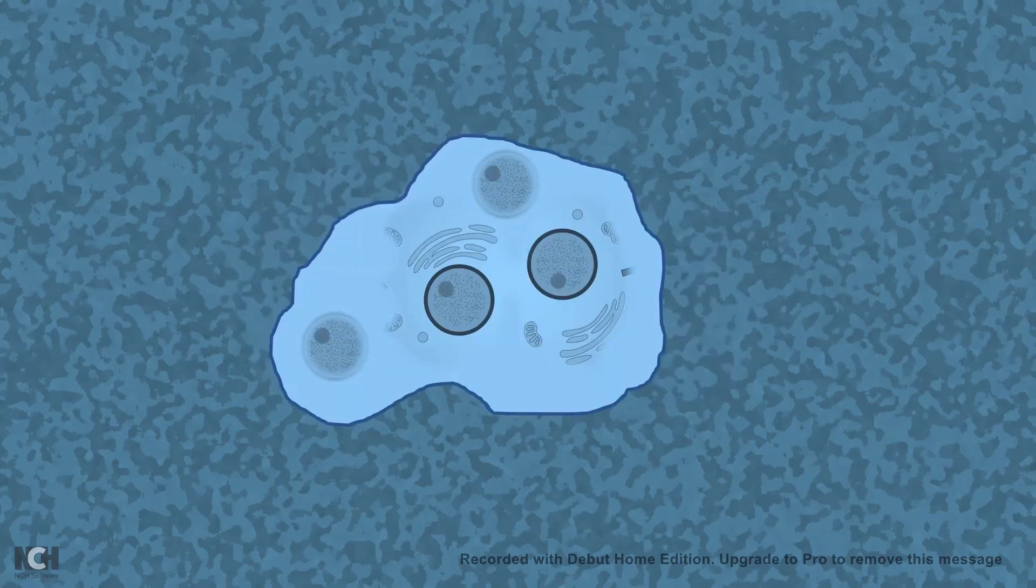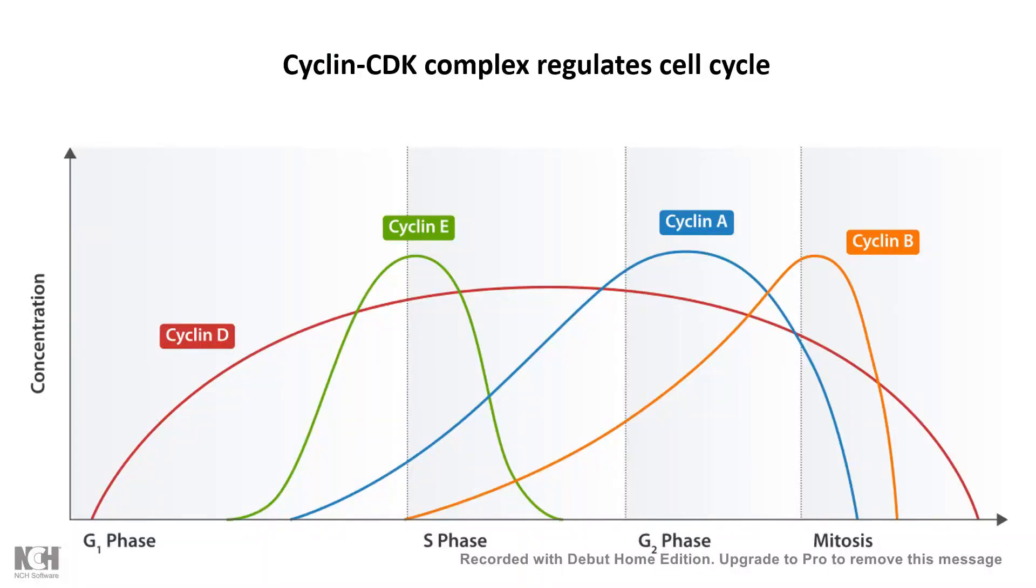In order to make sure that this process of cell division goes smoothly and all the errors can be rectified, there are specific cell cycle checkpoint mechanisms which are mainly regulated by cyclin and CDK complexes. Cyclin and CDK complexes are turned on in specific time windows and they have their job in that restricted time window. After that, they get degraded. If you want to learn more about cyclin and CDK, the link is given at the end of this video.